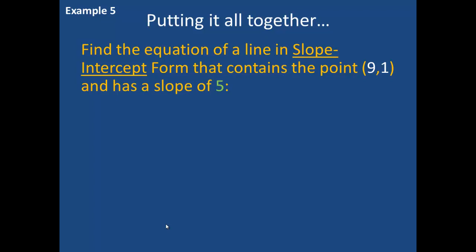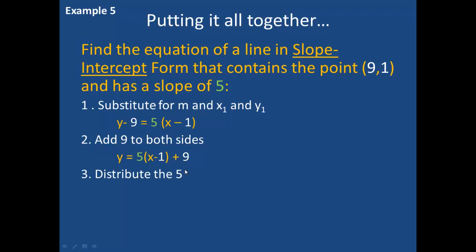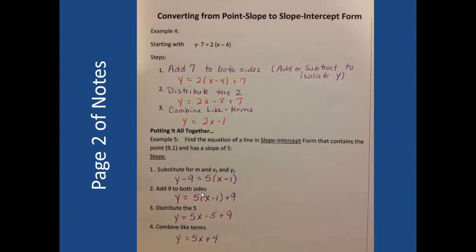In example 5, we are going to put it all together and find the equation of a line in slope-intercept form that contains the point (9, 1) and has a slope of 5. Since I am given a point that is not the y-intercept, I will start by using the point-slope form. I substitute 5 for m, 1 for x1, and 9 for y1. To solve for y, I add 9 to both sides, yielding y equals 5 times x minus 1 plus 9. I distribute the 5 to get y equals 5x minus 5 plus 9, then simplify by combining like terms to get y equals 5x plus 4. This completes the second page of your notes.